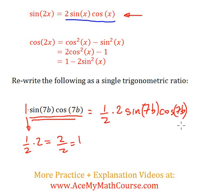Now, this is looking closer to what we had there. 2 sine x cos x. But instead of x, I have 7b. So what I'll do is just say x is equal to 7b.